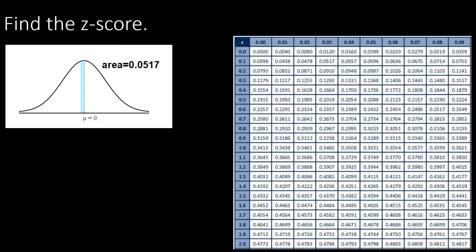The z-score here is on the left side of the mean, so we are expecting a negative z-score. Locating 0.0517 on the z-table — the area is connected to the center, so we locate it directly. Moving across to the first column we get 0.1, and the header digit is 3. So our z-score is negative 0.13, negative because it's on the left side of the mean.